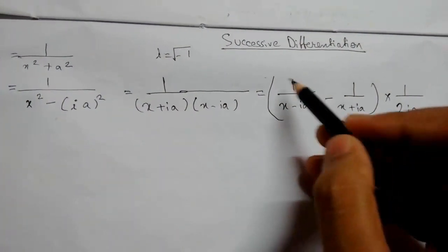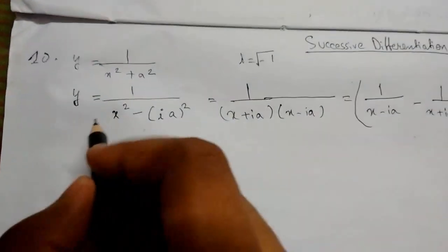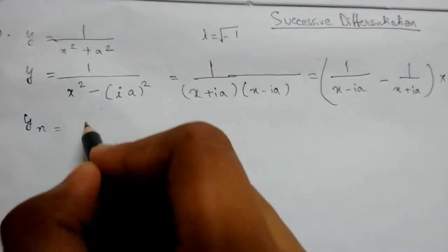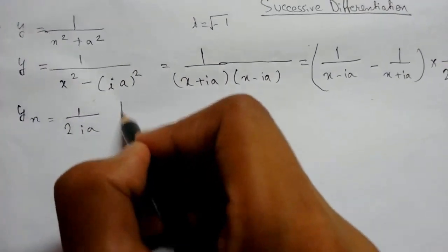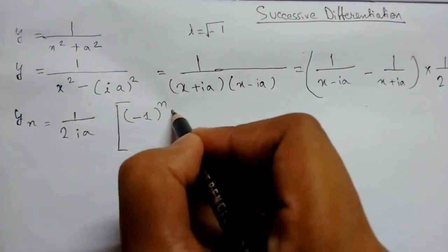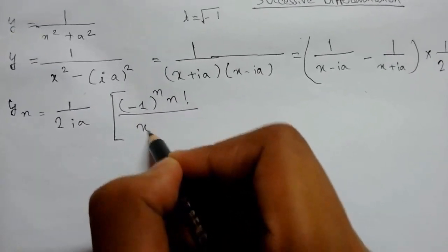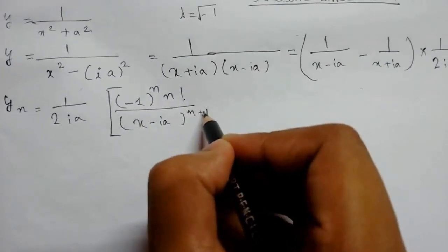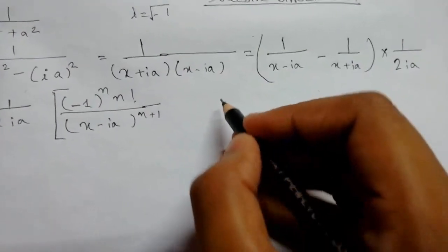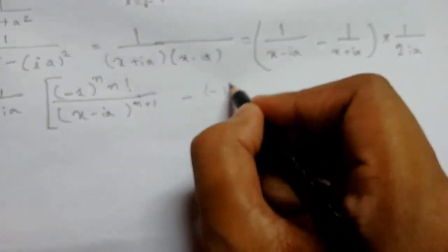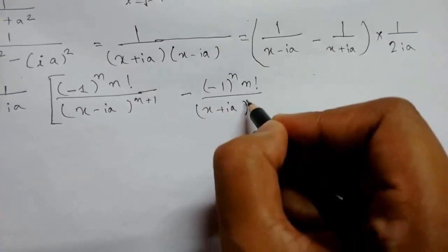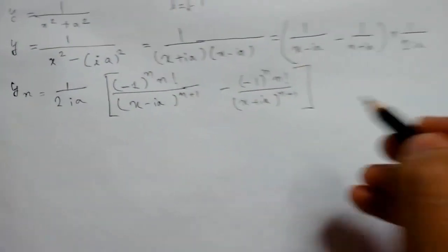We apply the nth derivative formula to each of the two terms. So yₙ equals, taking the outside factor 1/(2ia): the first term gives minus (−1)ⁿ · n! upon (x − iota·a)^(n+1), and the second term gives minus (−1)ⁿ · n! upon (x + iota·a)^(n+1). This is our yₙ expression.